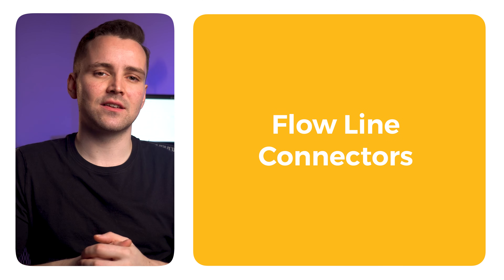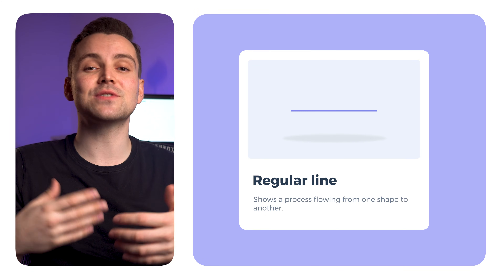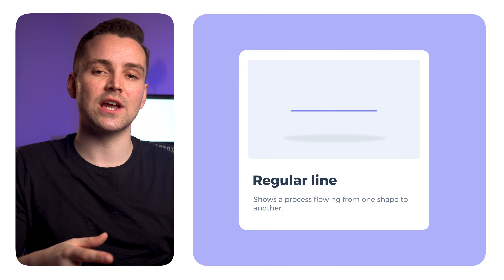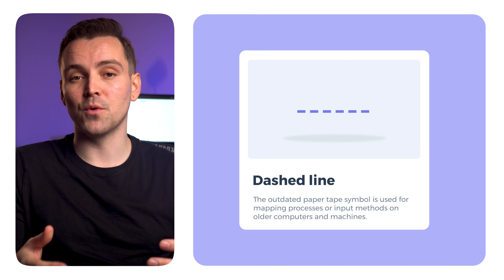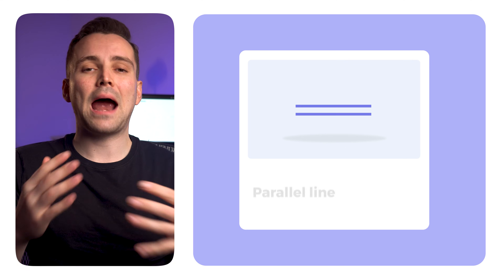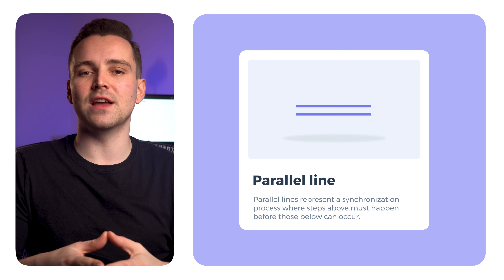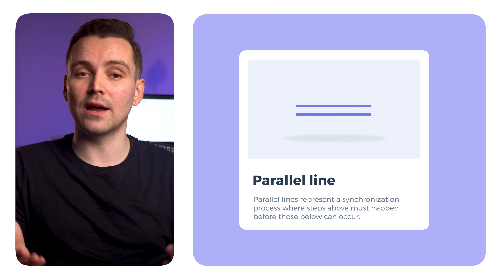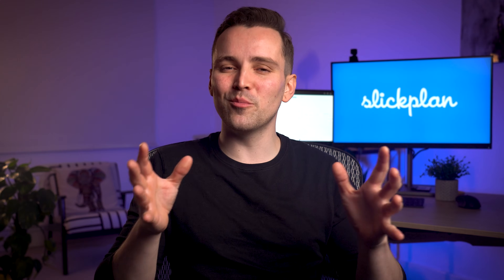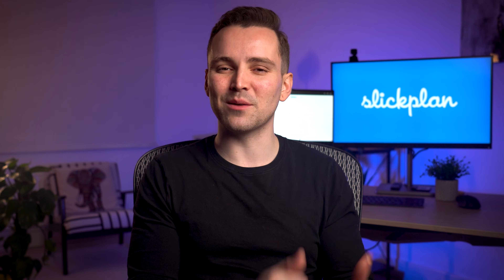As for the connecting lines, they have some specific meanings as well. This one simply shows a process flowing from one shape to another. The dashed line denotes alternate paths or an alternate process. Parallel lines represent a synchronization process where steps above must happen before those below can occur. There you have it — your complete flowchart symbol and connector guide. The only thing left to do now is to start diagramming with SlickPlan.